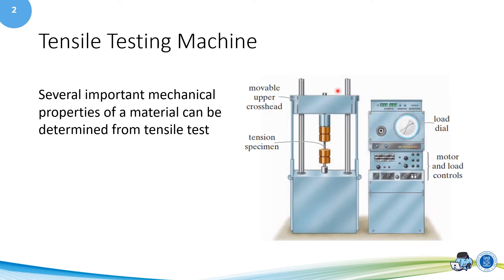In this figure, you can see the testing machine. This one is the upper crosshead, which can move in the vertical direction. This one is the load dial to display the magnitude of the axial force. This part is the motor and load controls. The specimen of the tensile testing is attached to this part. Also, the testing machine is equipped with the extensometer, which can be used to measure the deformation of the specimen.